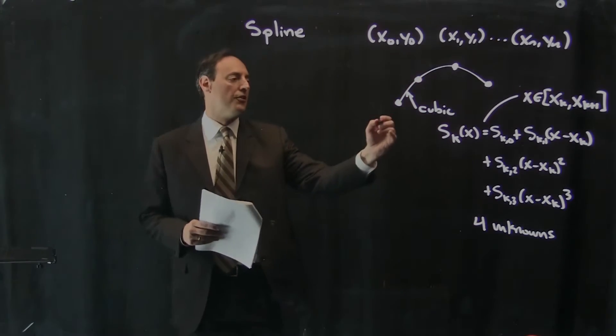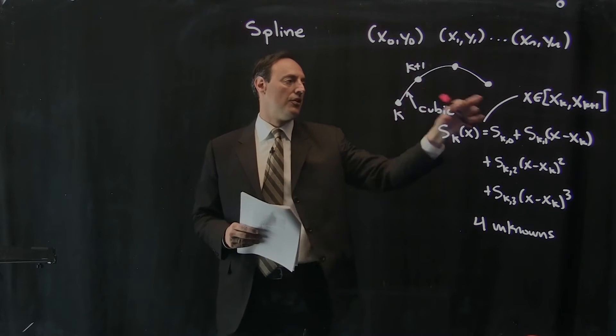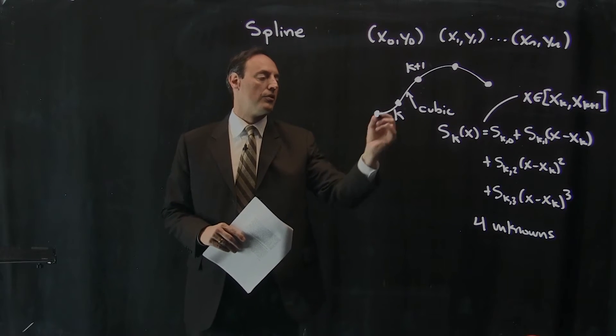this approximation here holds when you're in the interval from x of kth point to the x of k plus first point. All right? So if this is the kth point, this is the k plus first point, this approximation only works right there. And presumably, there's other points over here, too. Okay?